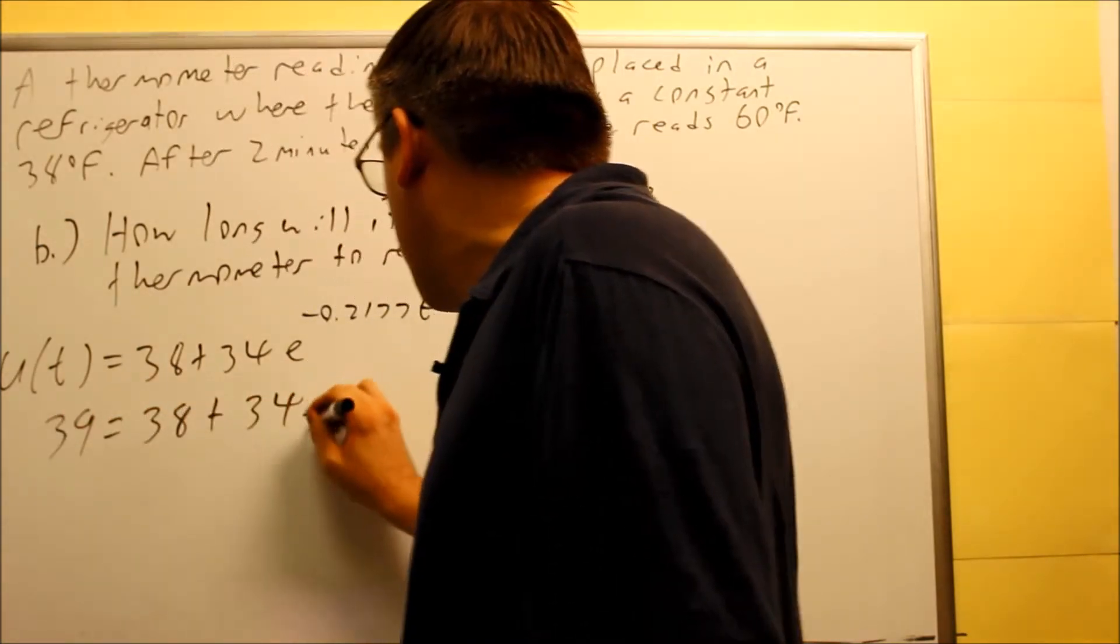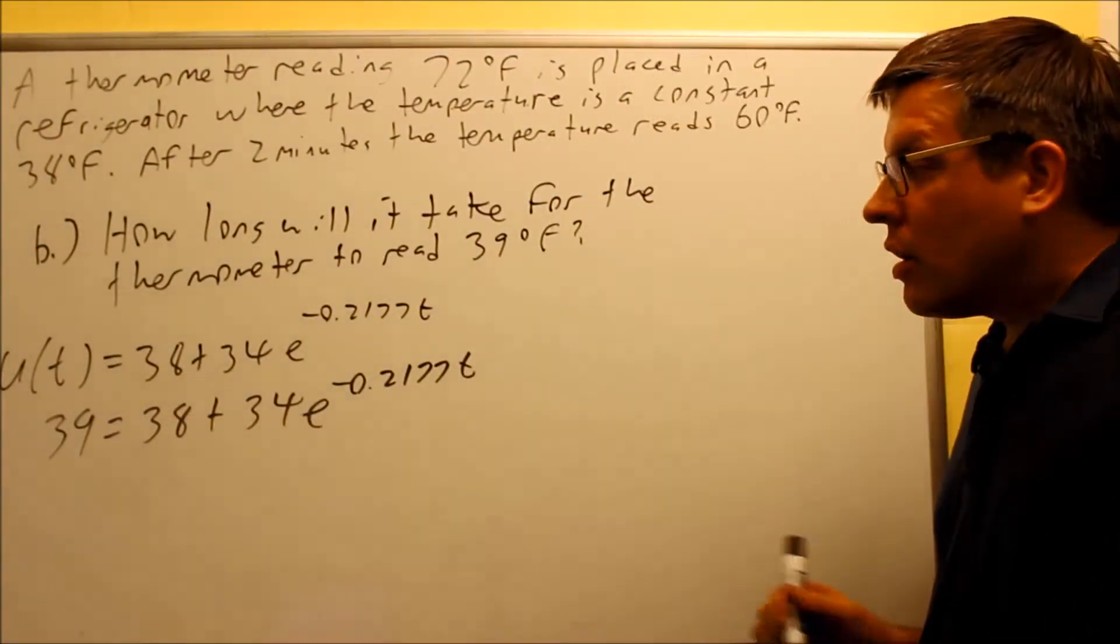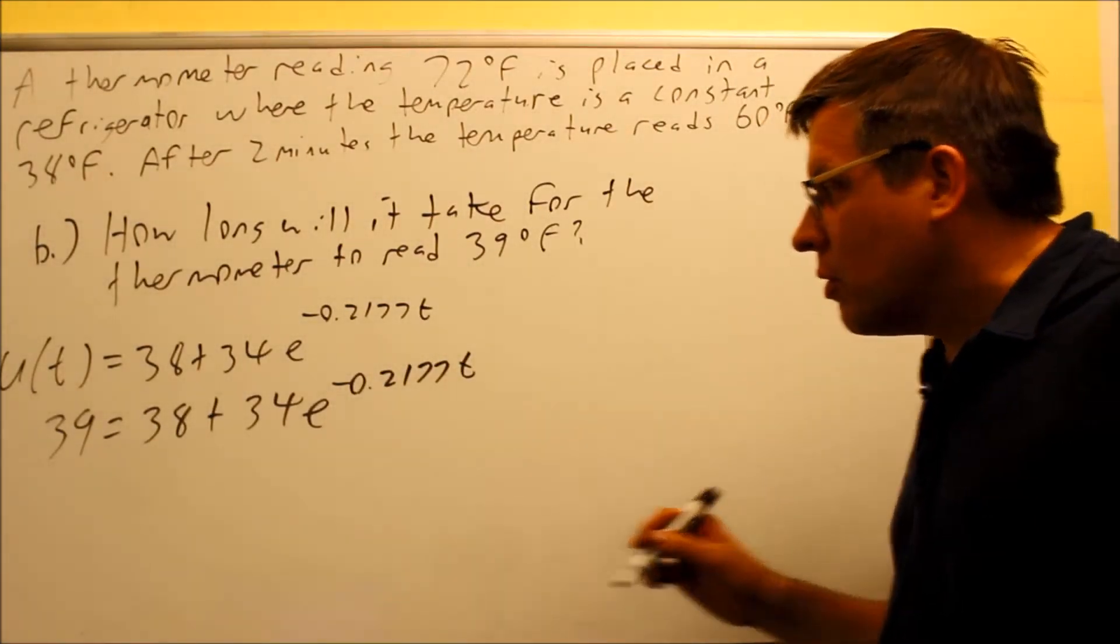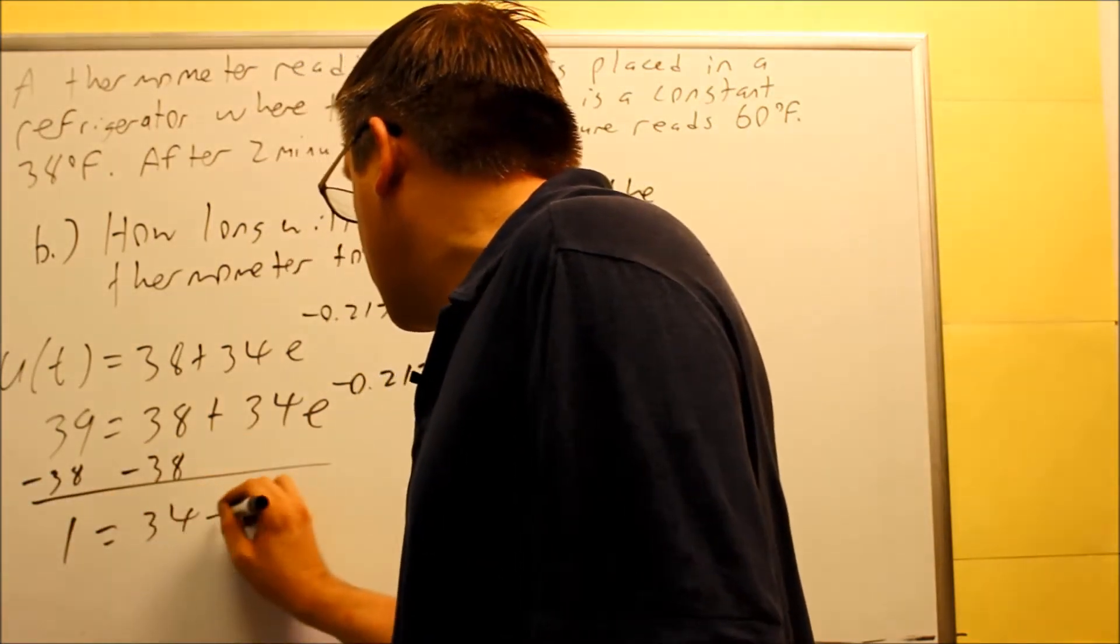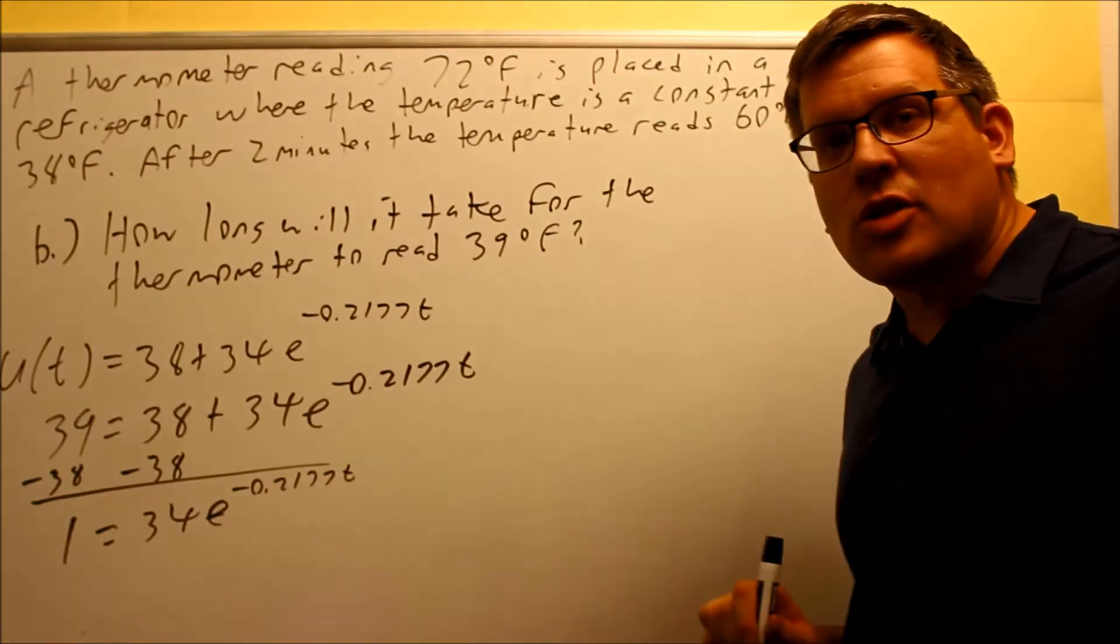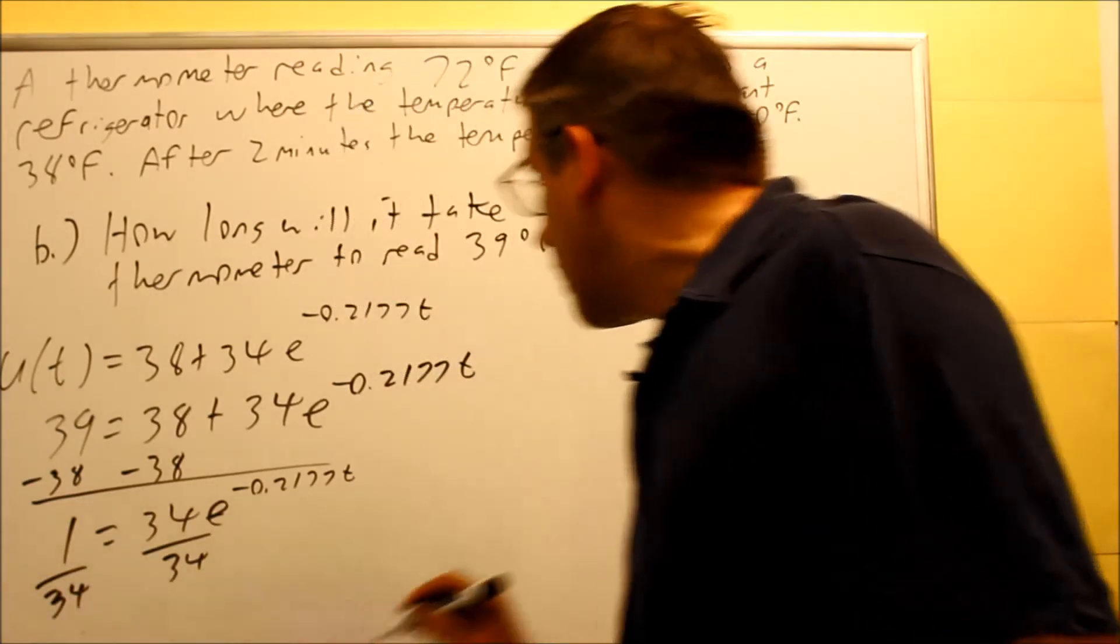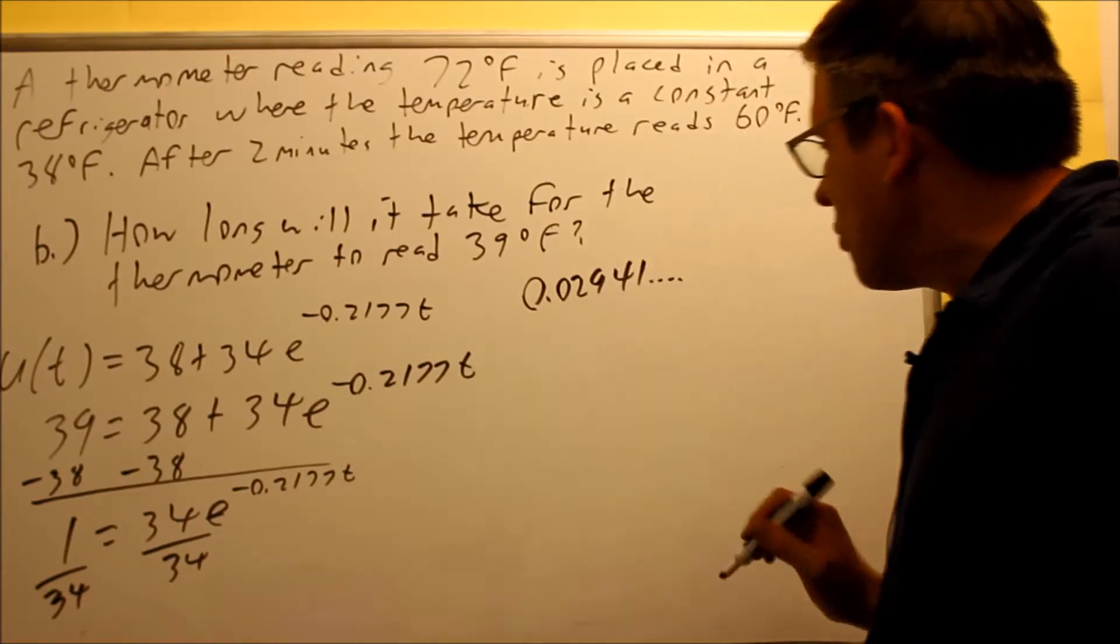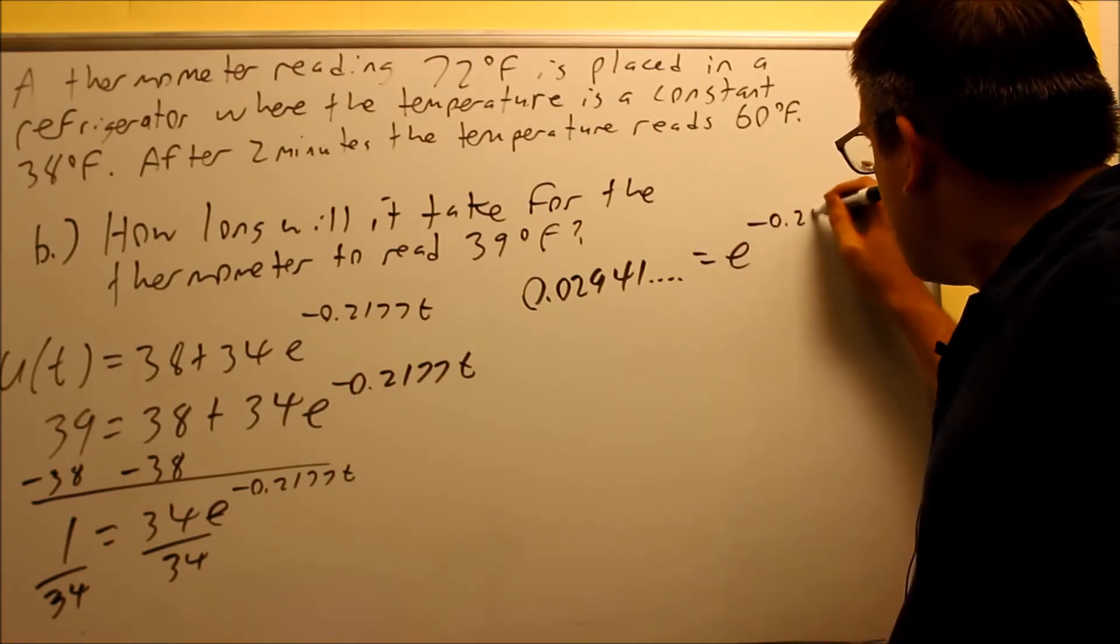39 equals 38 + 34e^(-0.2177t). We want to isolate the e to eventually solve for time. Subtract 38 from both sides and you get 1. Divide both sides by 34, we get 0.02941 with some more decimals equals e^(-0.2177t).